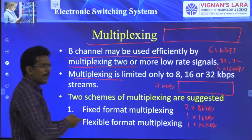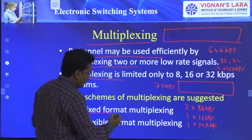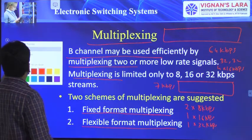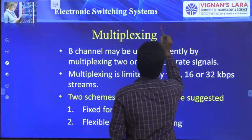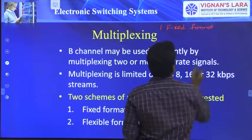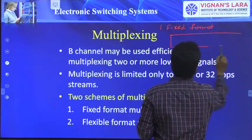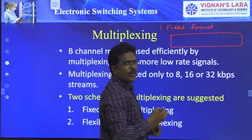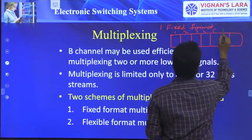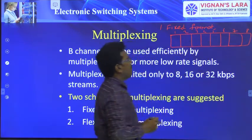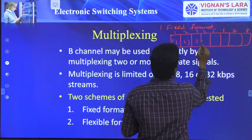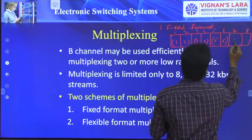There are two types of multiplexing schemes. One is called fixed format multiplexing and the other is called flexible format multiplexing. In the fixed format, the 8-bit octet positions 1 through 8 are grouped into fixed sets: bits 1,2 as one pair; 3,4 as a pair; 5,6 as a pair; and 7,8 as a pair. Alternatively, they can be grouped as quads: 1,2,3,4 as one set and 5,6,7,8 as another.